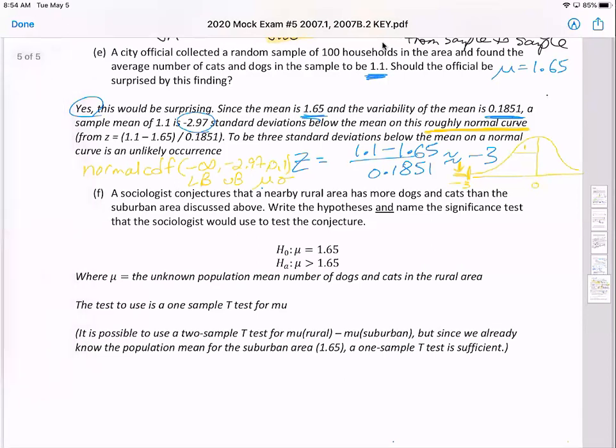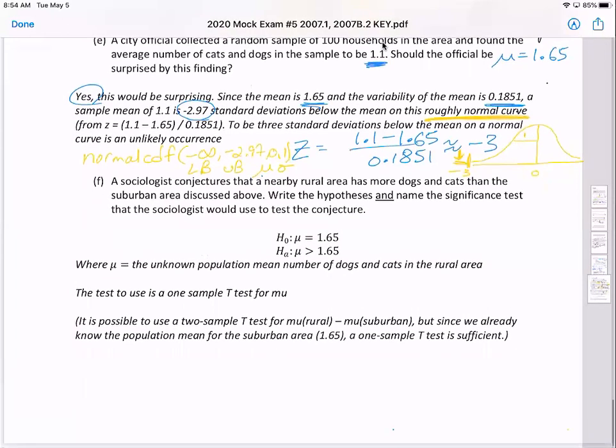So would we have negative infinity to negative 2.9701 if you use the standardized values, lower bound, upper bound, mean, and standard deviation. And then you could calculate the probability. And then lastly, we have a sociologist conjectures that a nearby rural area has more cats and dogs than the suburban area mentioned above. Write the hypotheses and name the significance test. You've had a lot of practice with these in these mock exams. But basically, in this question, I wanted to review a lot of probability topics that I think are likely on this year's exam. Stuff that's lower on the calculation side. But also, College Board's been clear that you'll have to be able to jump from kind of one chapter, one unit to another. So here we're jumping to inference, writing hypotheses.